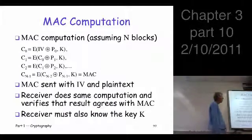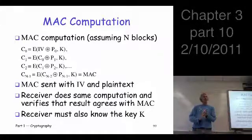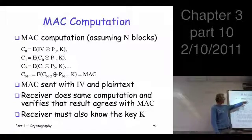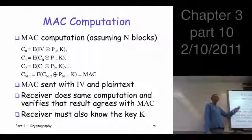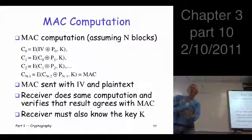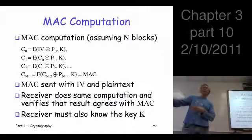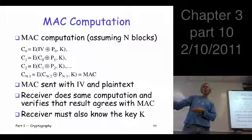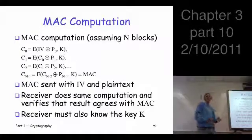Here's the MAC calculation. Suppose we have N blocks of plaintext. We're using CBC encryption, so we need a key and also an initialization vector. We start encrypting like we would in CBC mode and take the very last ciphertext block — we call that the MAC. That last block we're going to send along with the plaintext. What does the receiver need to know? They need the key, they receive the plaintext, they receive the MAC, and they need the IV — because the sender chose that at random, so you have to tell them what it is.